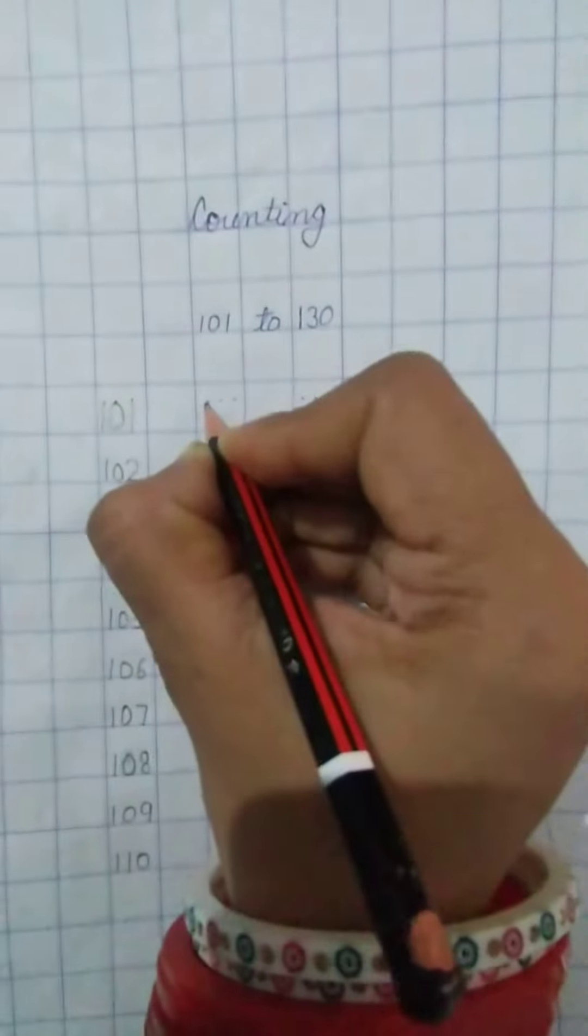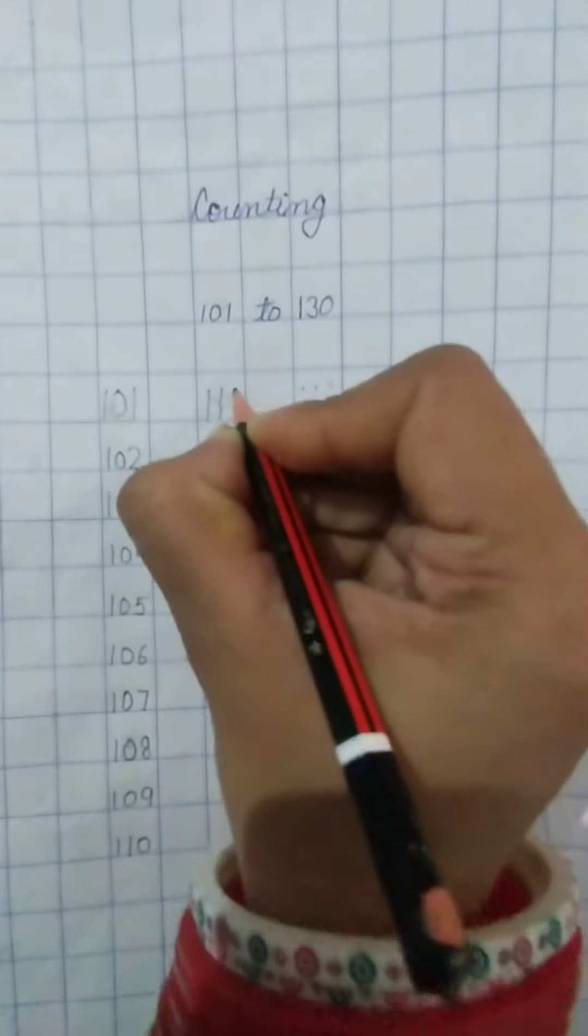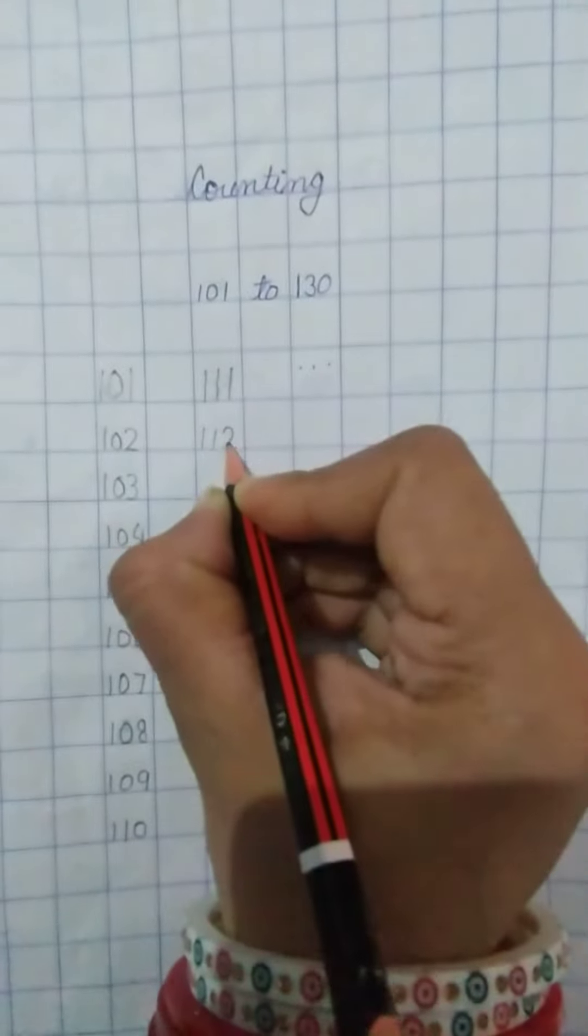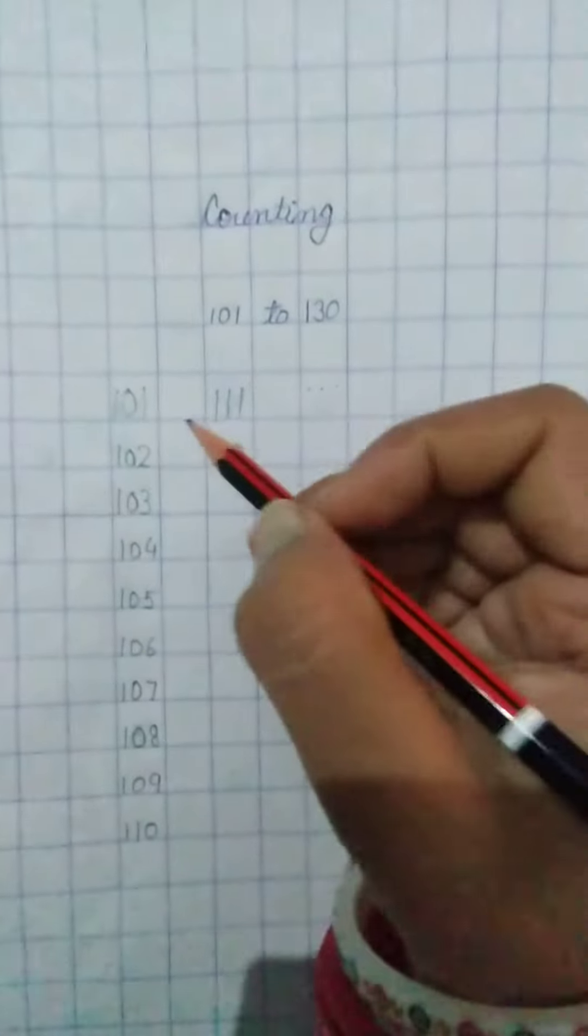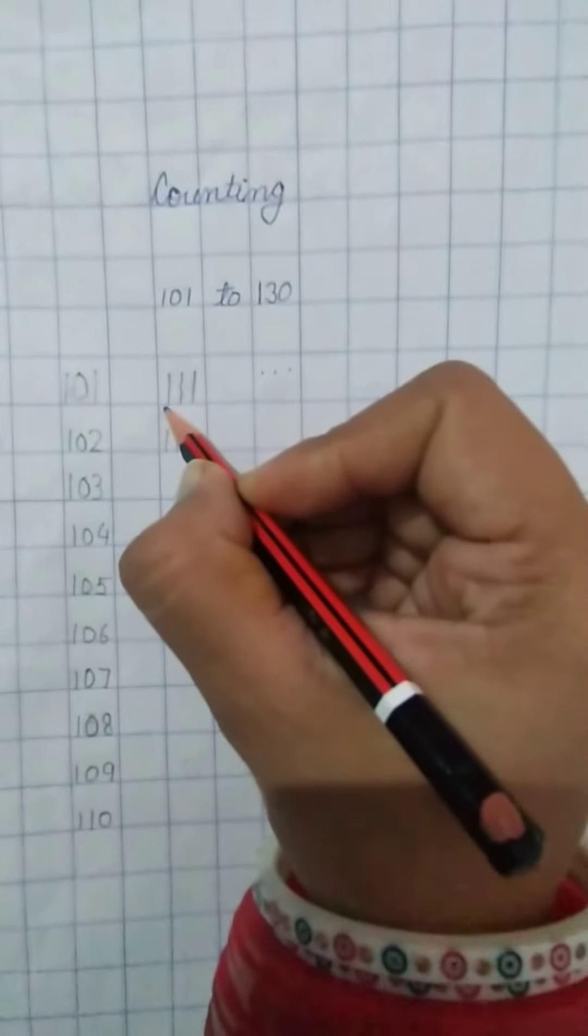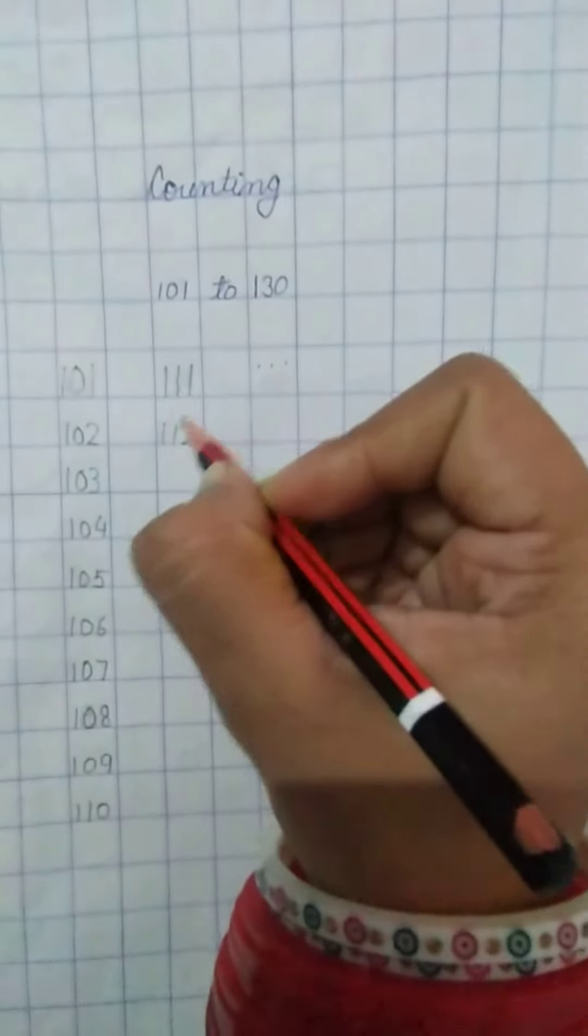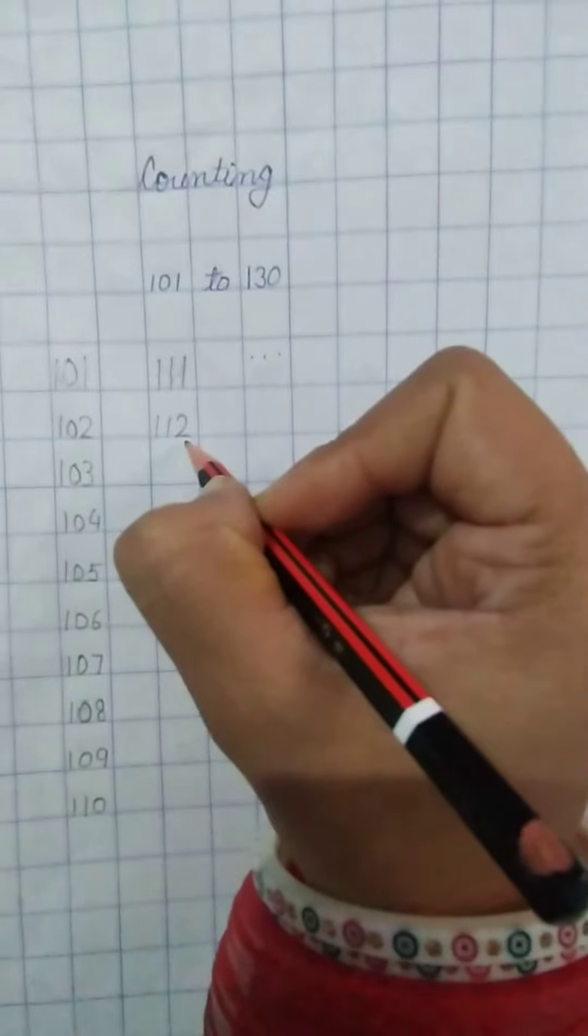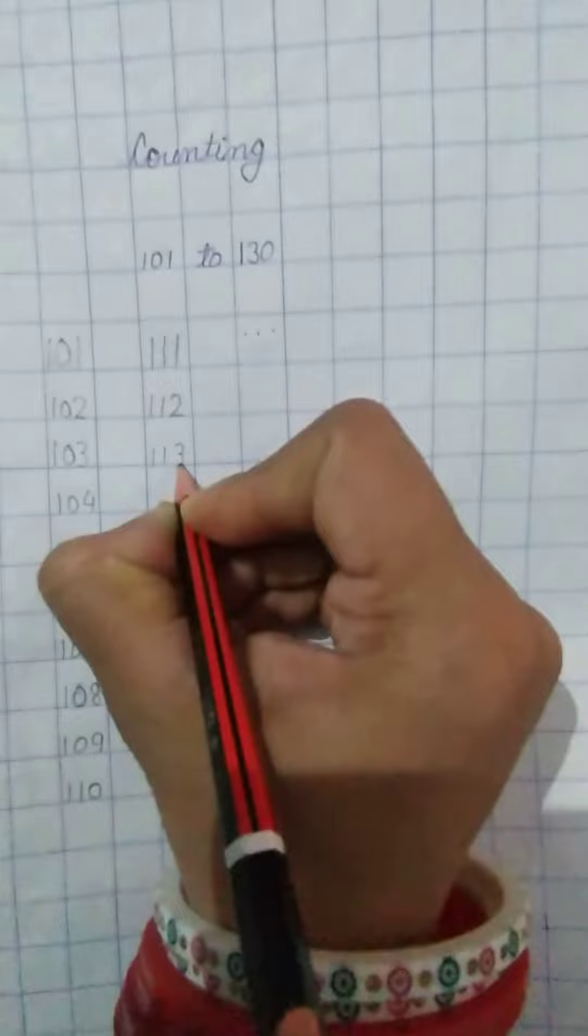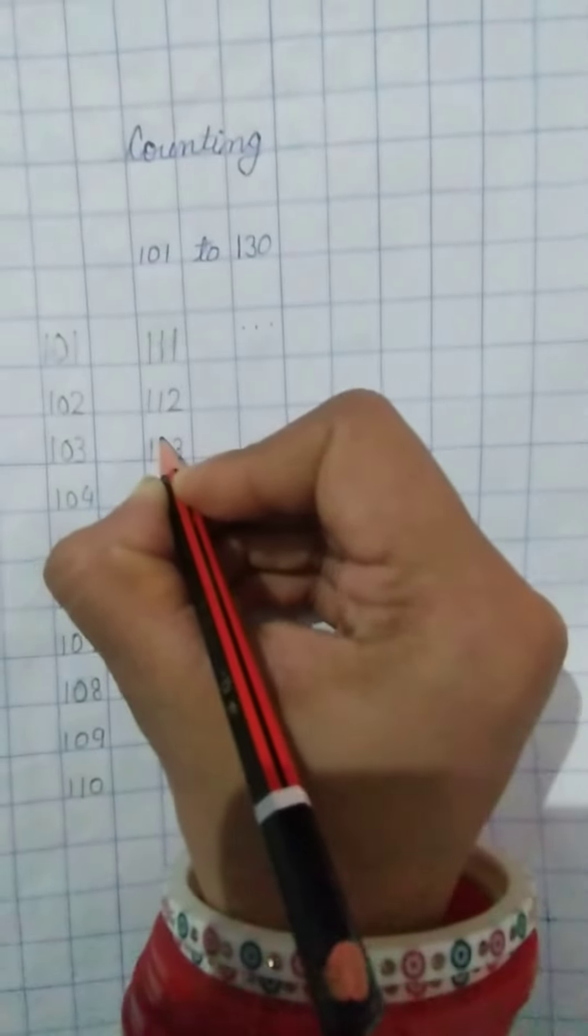Next line bhi ta, 111, 112. Aapne bhi ta ye dhyan rakhna hai, hum jye counting kone si kare hai, 100, 100 then 11, 100 then 12, okay. 113.